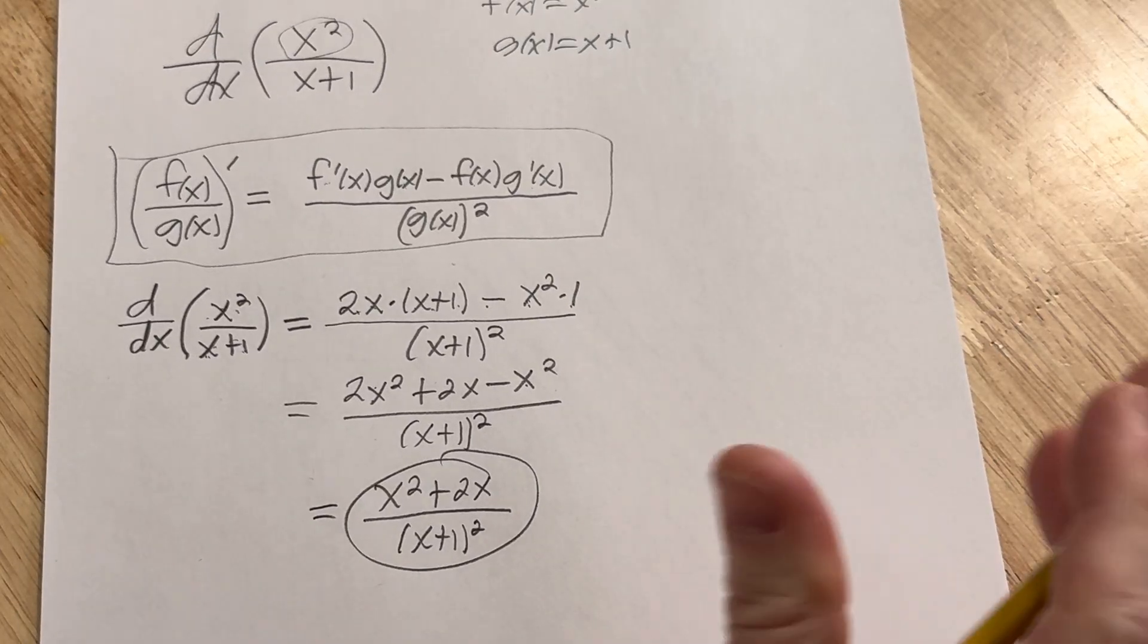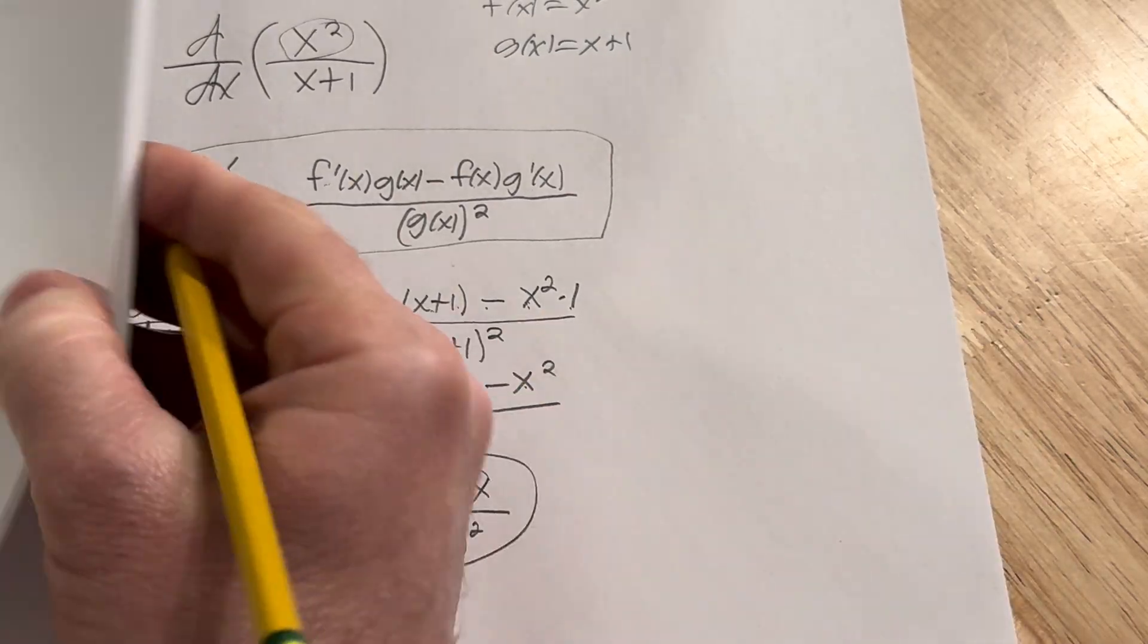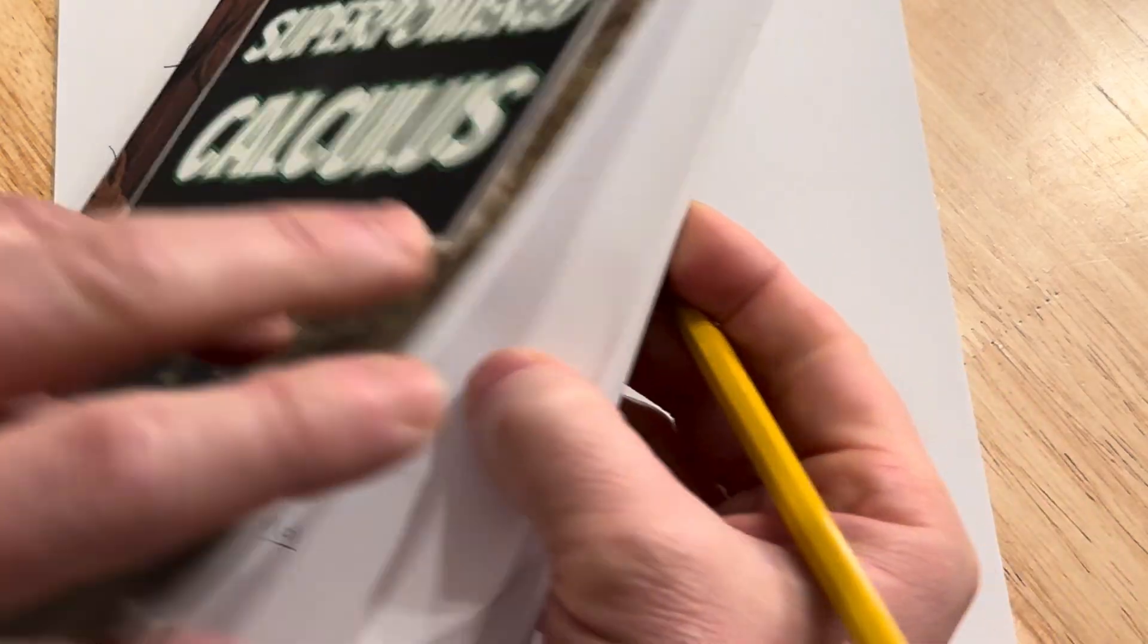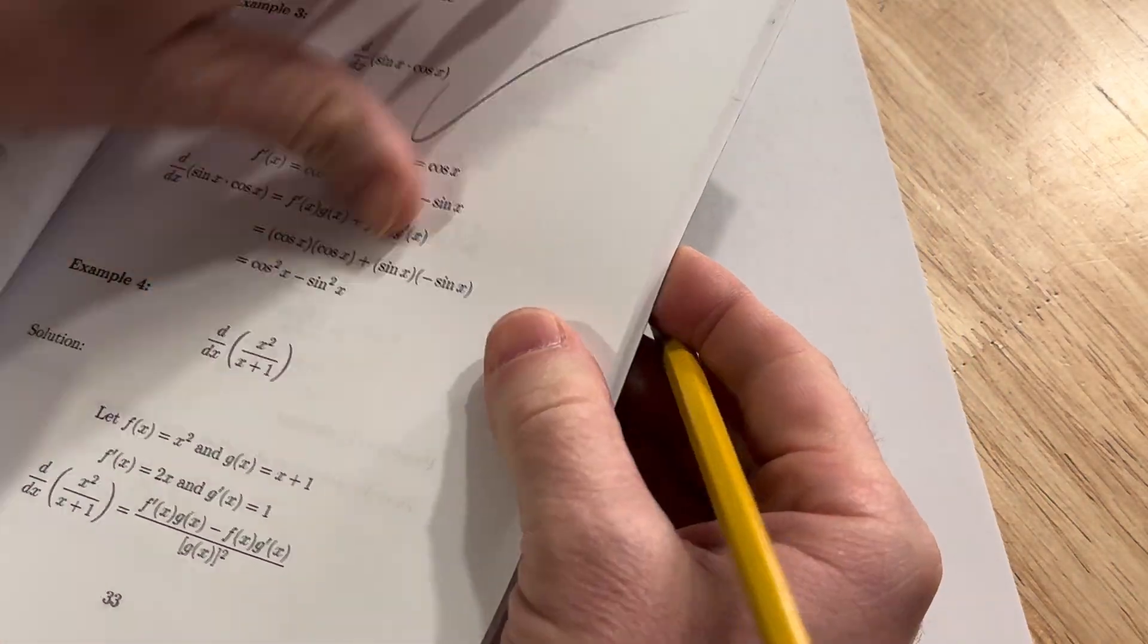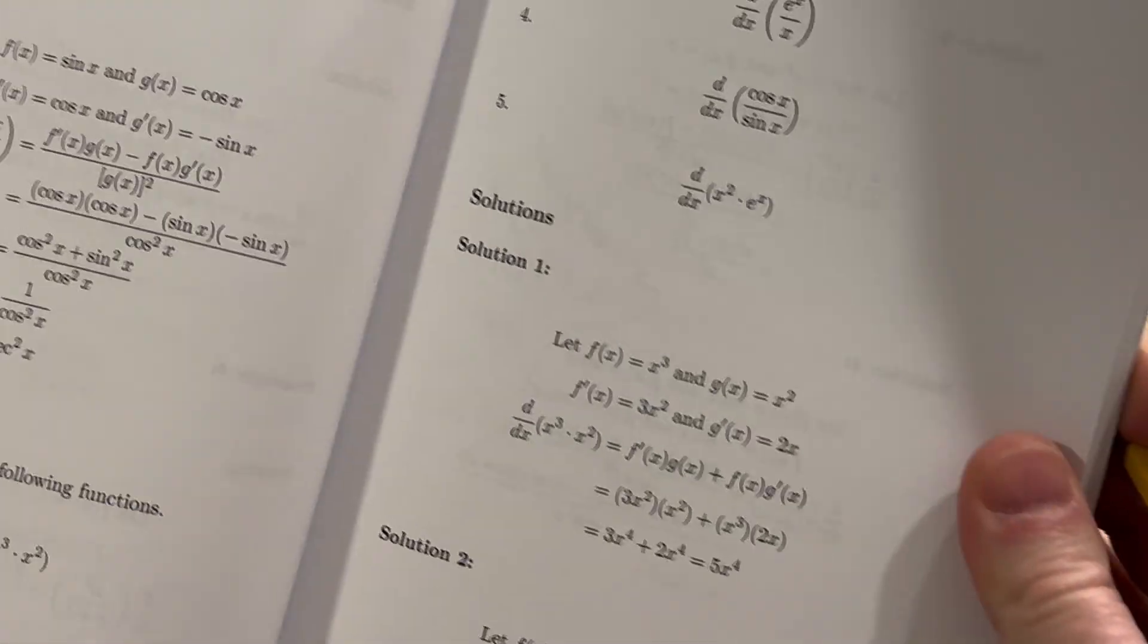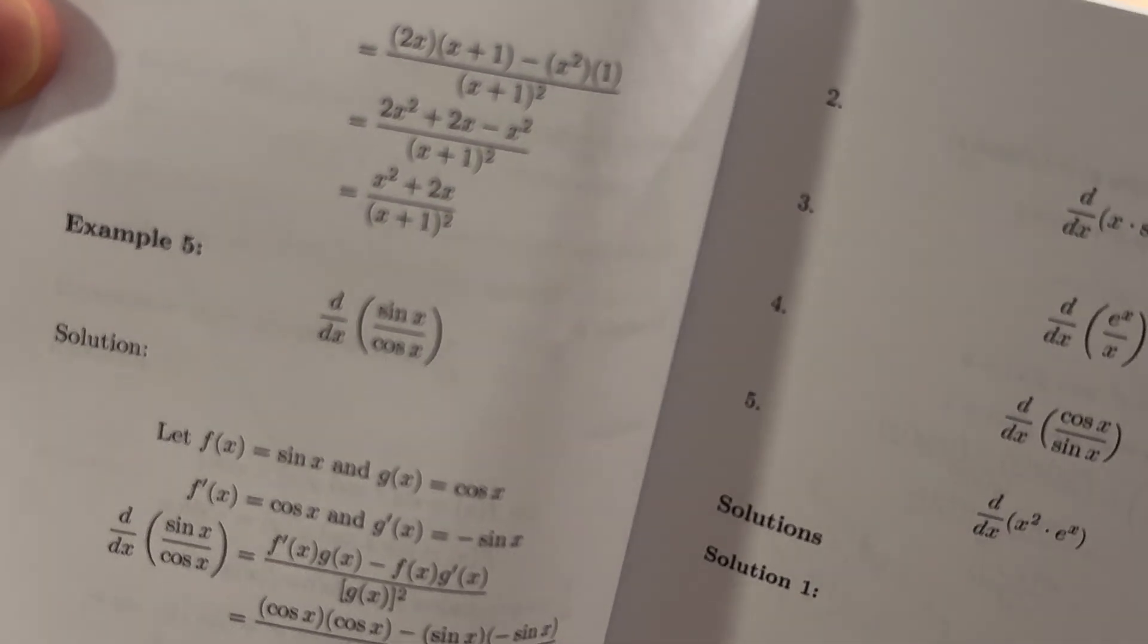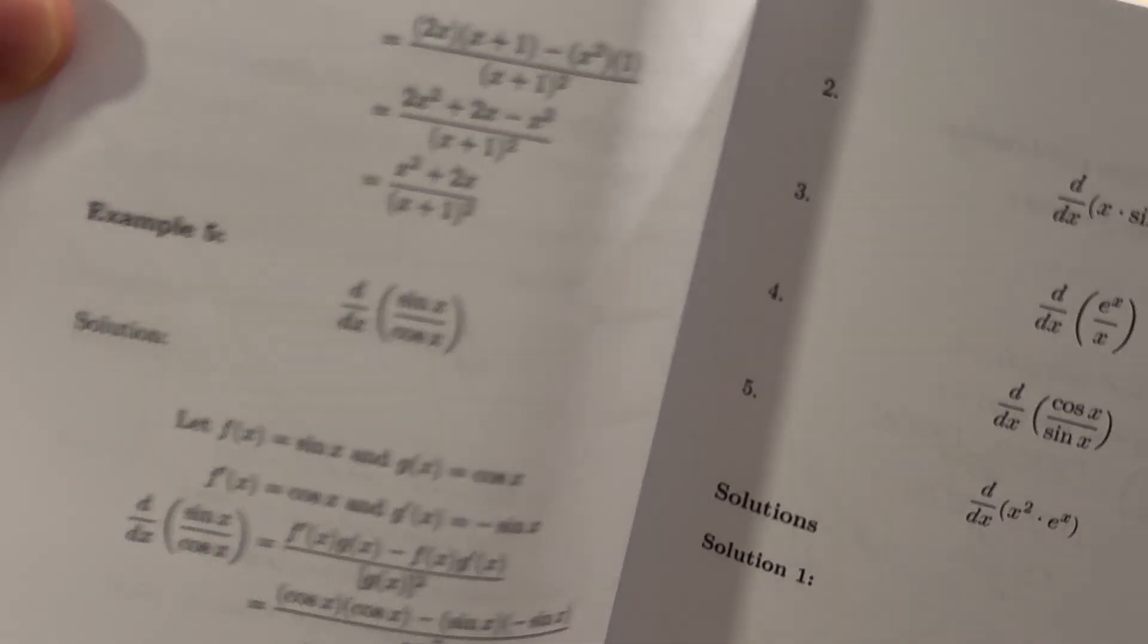The best thing is we can check. This is from one of my books, Superpowered Calculus. Let's just double check. So we got x squared plus 2x over x plus 1 quantity squared. Yep, it's correct.